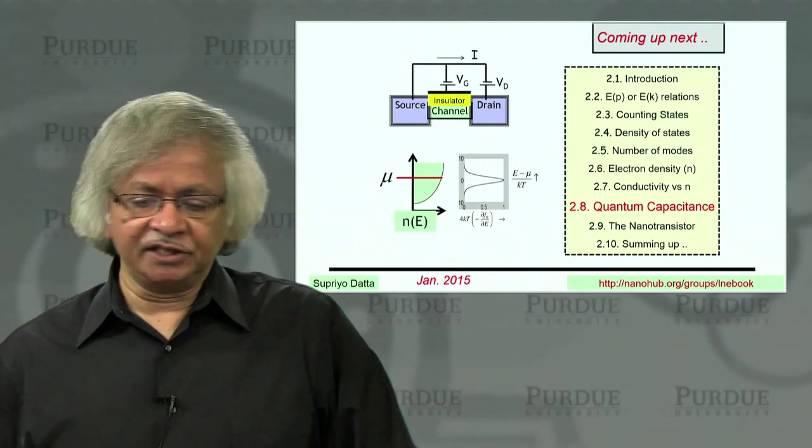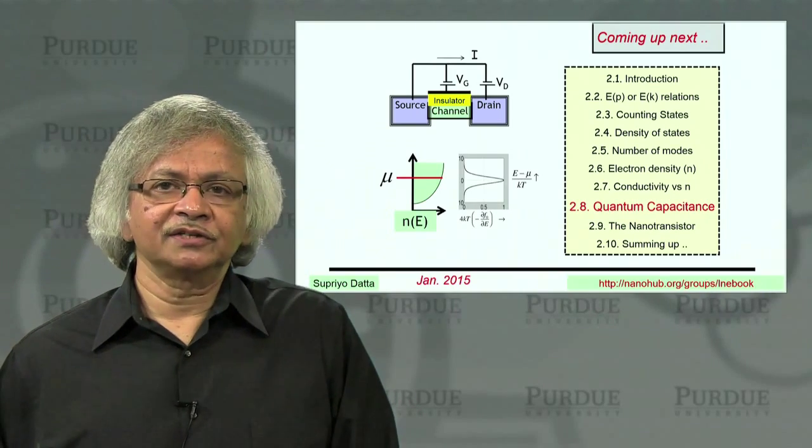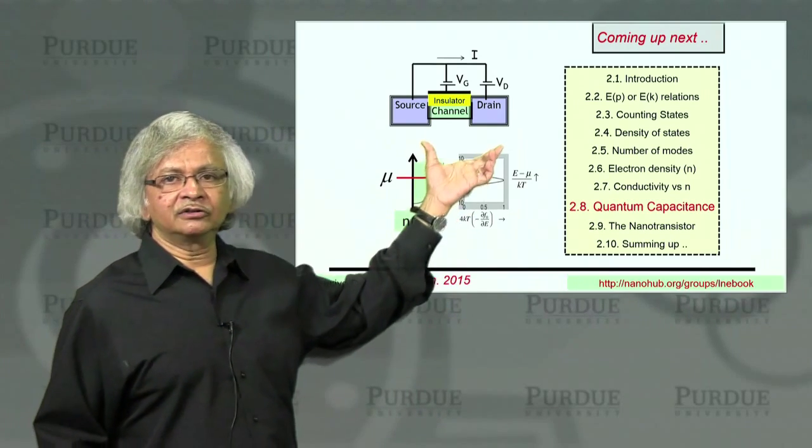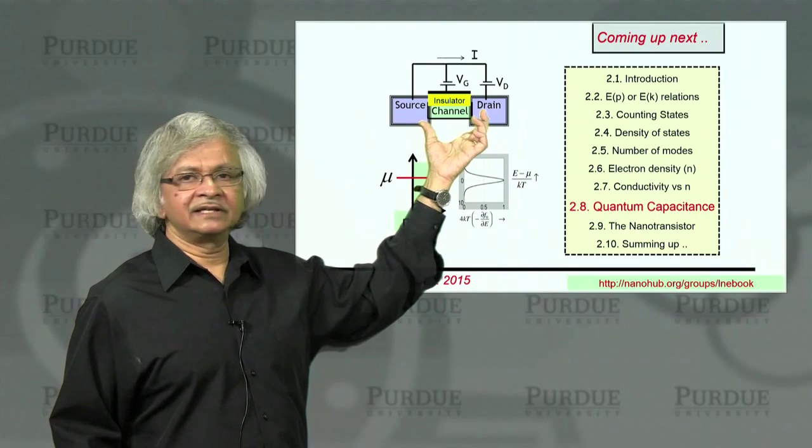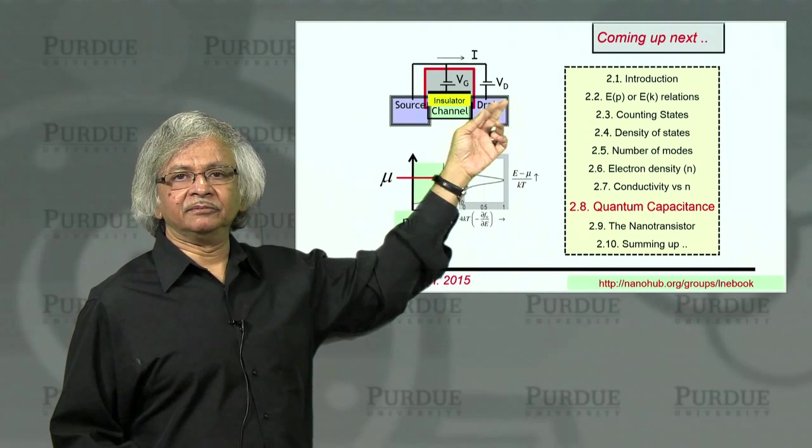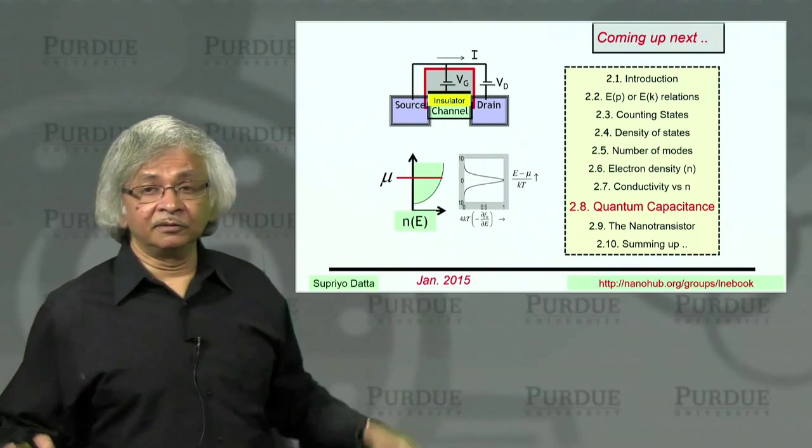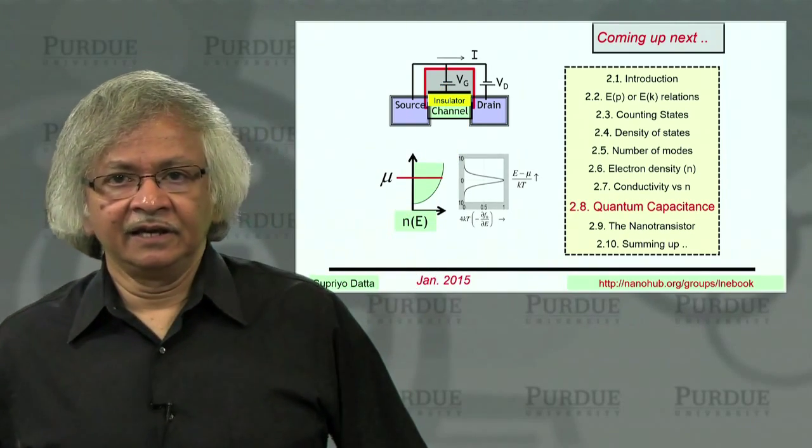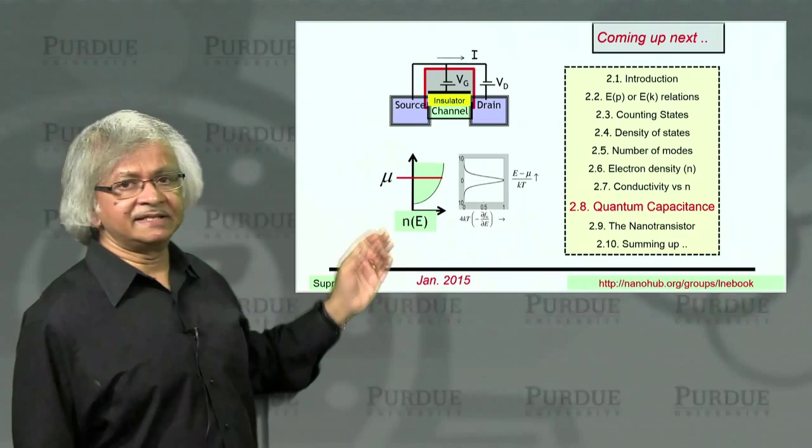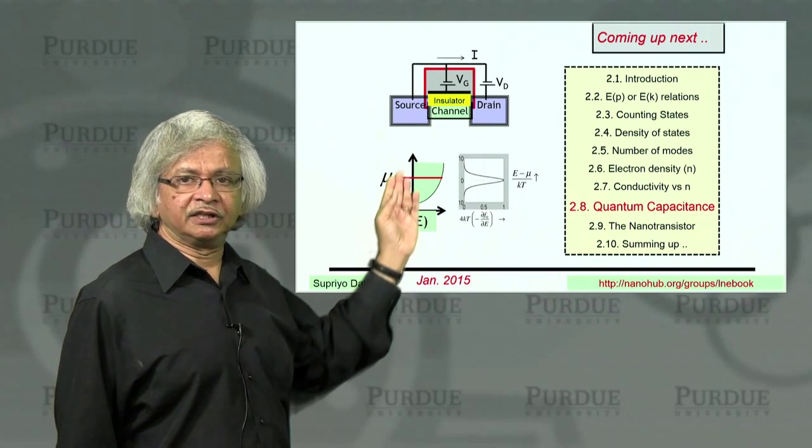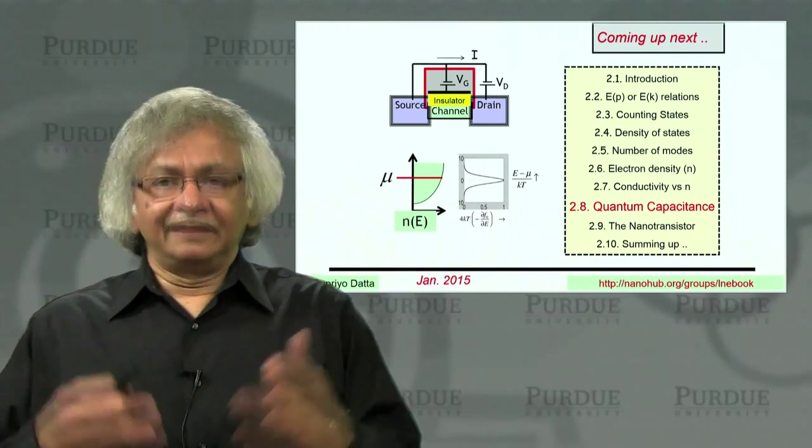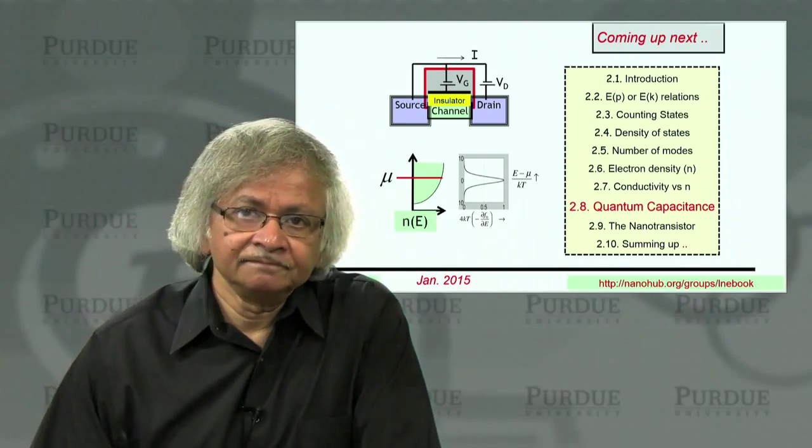So in the remaining two lectures then of this unit, what we want to do is introduce this third terminal. That is, so far we have been talking about devices as if there's two contacts and a channel. But in practice, of course, a transistor has a third terminal. And that third terminal is all important. That's what's called the gate. And what it does is it controls the conductance of the channel. How does it control it? Well, basically by moving the electrochemical potential up and down. Now how it does that, how much gate voltage is needed to change it, that's what we'll talk about in the next lecture. Thank you.